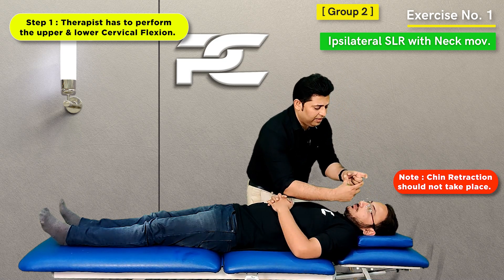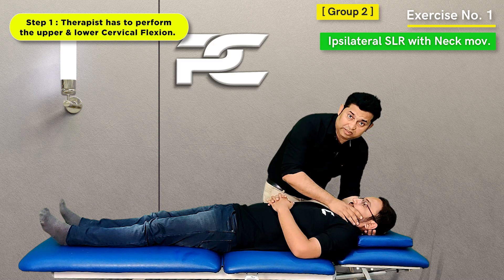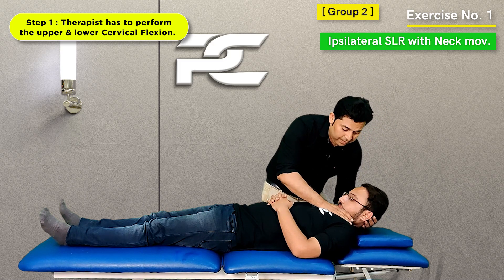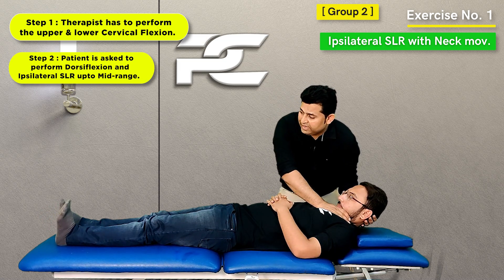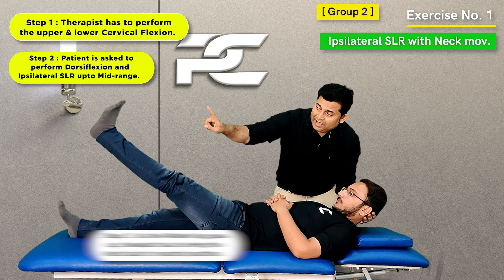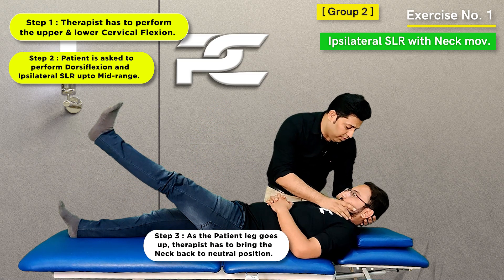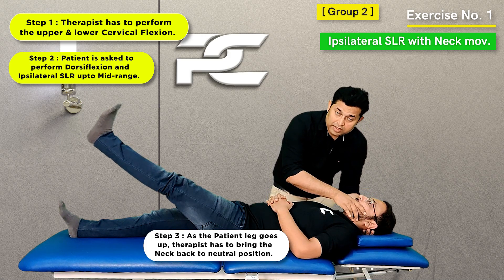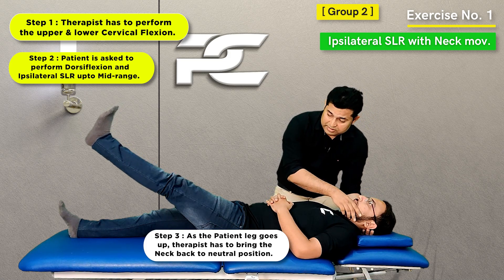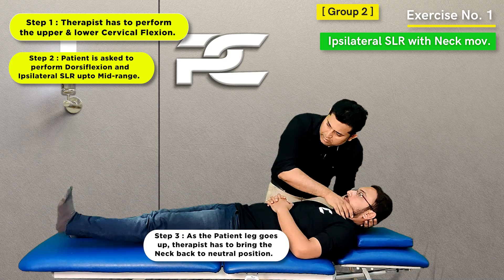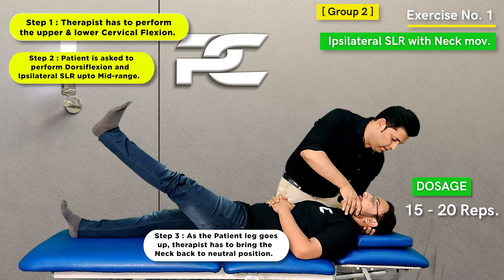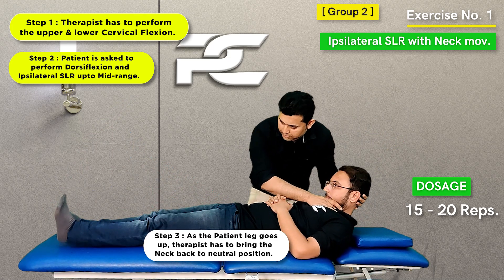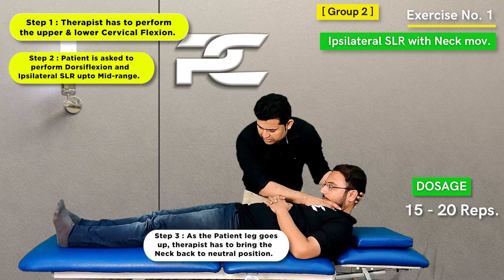Care should be taken that there is no chin retraction movement — it is just the upper and lower cervical flexion movements that the therapist is emphasizing upon. While maintaining the head in this manner, the patient performs left-side ankle dorsiflexion along with the mid-range SLR movement, and as the leg goes up, the therapist takes the head back into the neutral position.